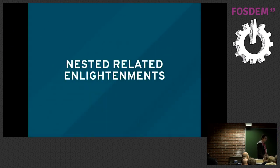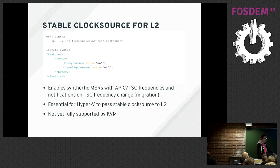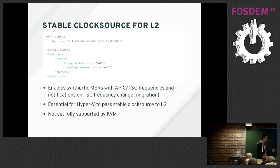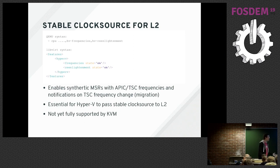There are also features required if you are running nested guests — for example Hyper-V on KVM, or if you're enabling some Windows security features that enable Hyper-V underneath. For a stable clock source in nested configurations you need a couple of additional enlightenments: one tells the level-one hypervisor about your APIC frequency, and another tells it when the frequency changes — for example when you migrate the level-one guest. This is not currently fully supported in KVM, so if you have TSC scaling it's not an issue, but on older CPUs your clock may start ticking at the wrong frequency.